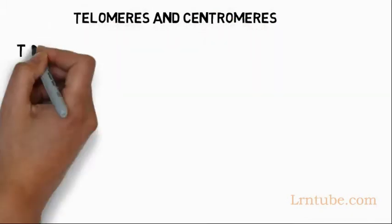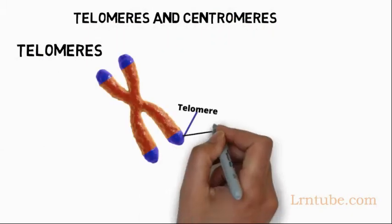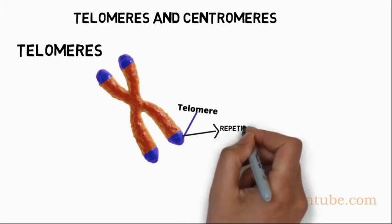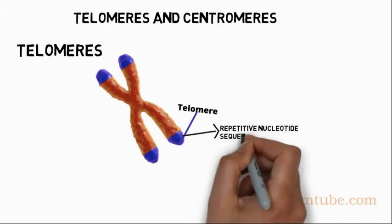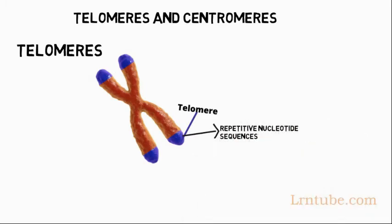A telomere is a region of repetitive nucleotide sequence at each end of a chromosome, which protects the end of the chromosome from deterioration or from fusion with neighboring chromosomes.